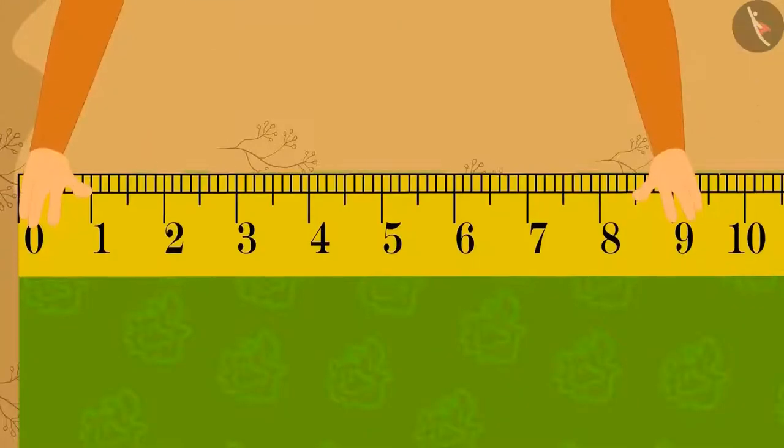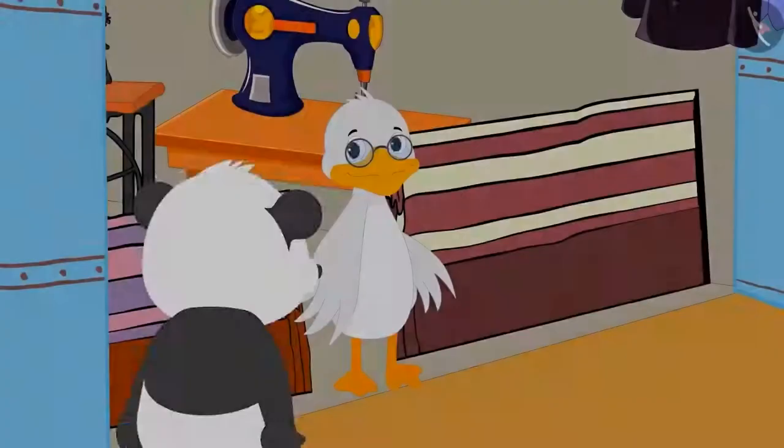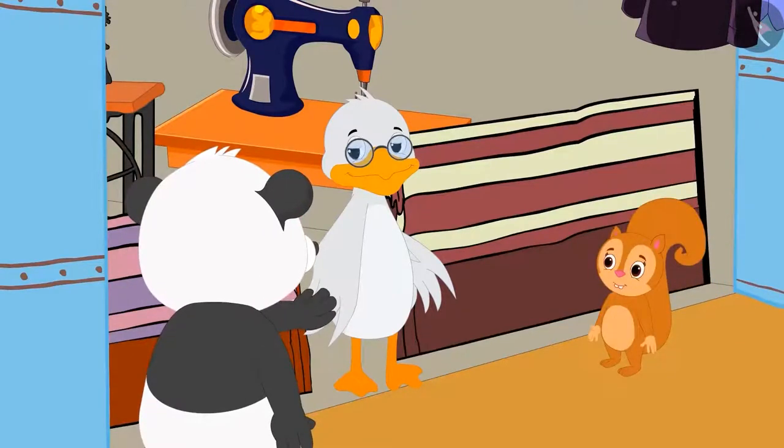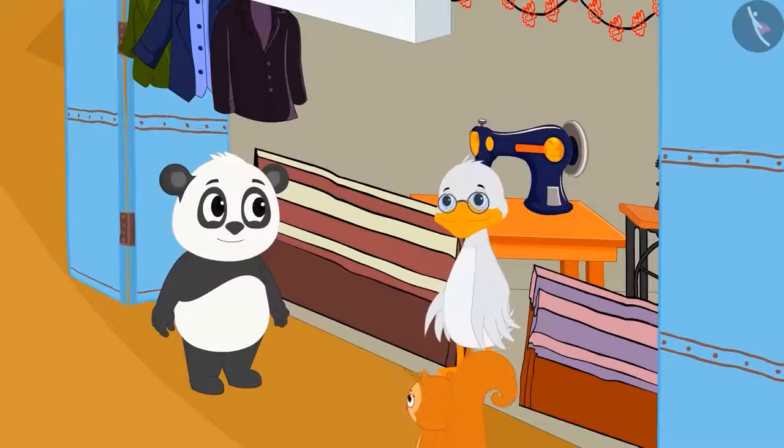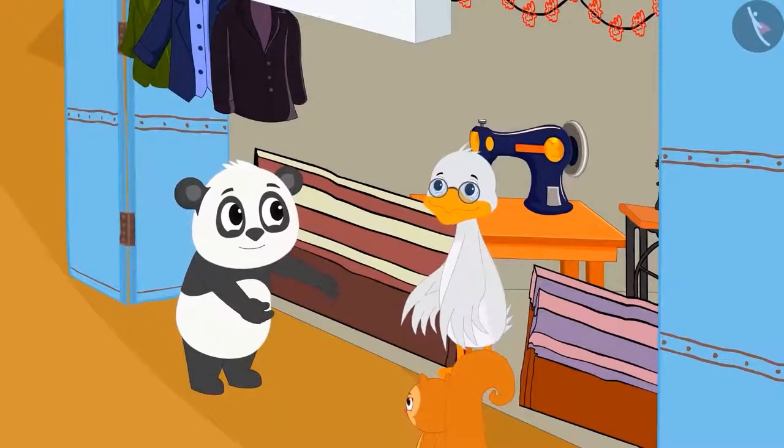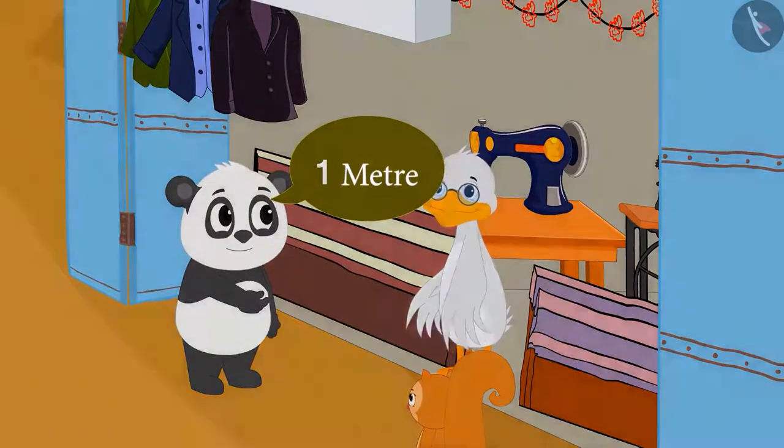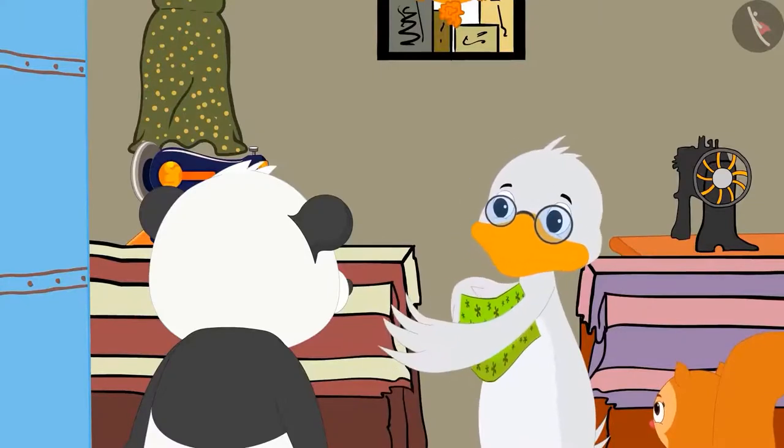Chanda measured the size of the curtains with her measuring tape. When Chanda reached Badbole uncle's shop to get her curtains stitched, Golu was also there buying material for his shirt from uncle. Chanda saw that Golu asked uncle for a one meter long material and uncle cut the material as long as his arm length.